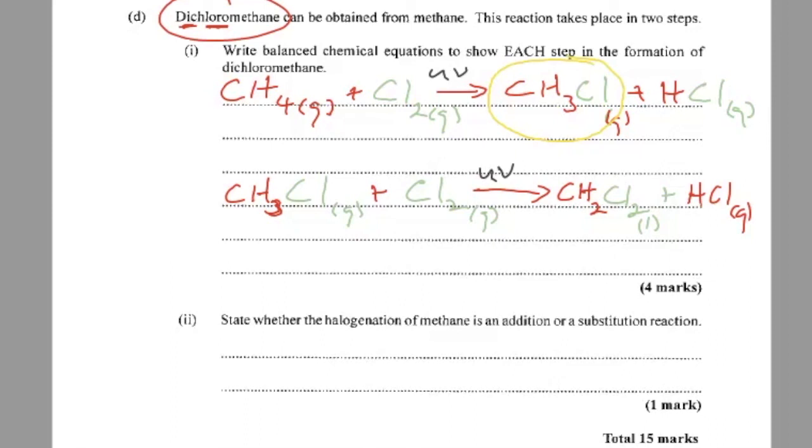State whether the halogenation of methane is an addition or a substitution reaction. And we saw what was happening there. Chlorine took the place of hydrogen just like in football. So this is a substitution reaction. And that would have given you one more mark and a total of 15 marks.